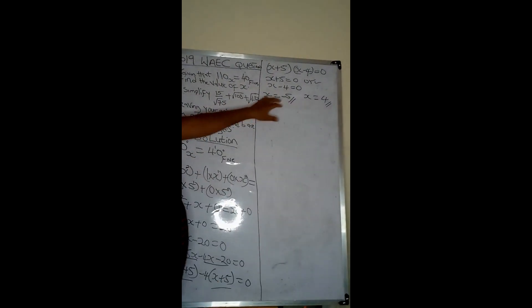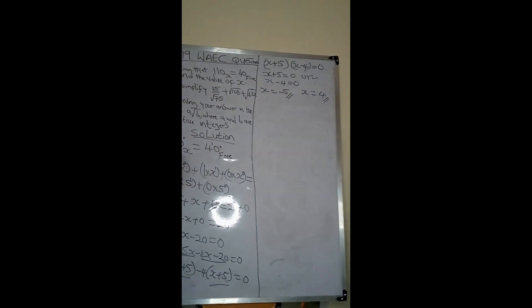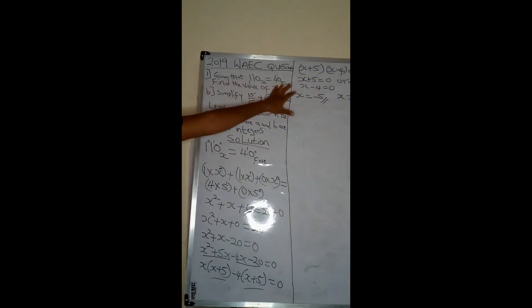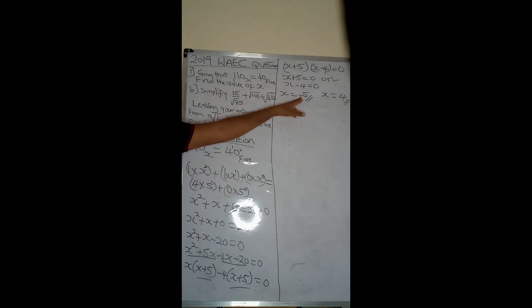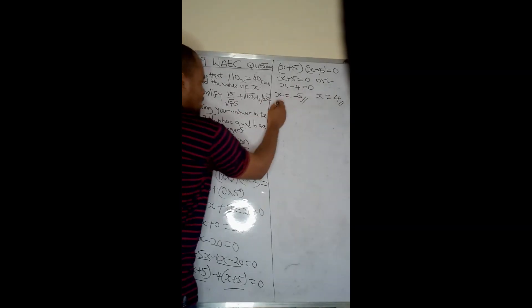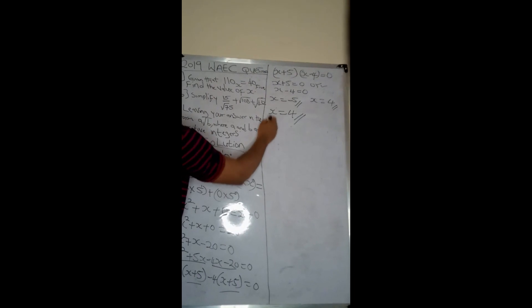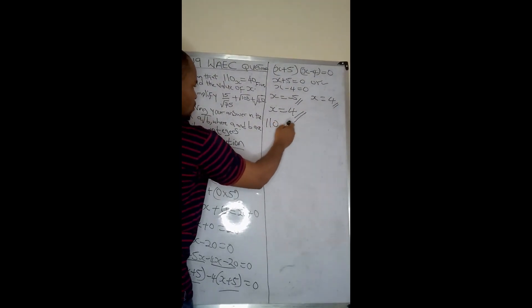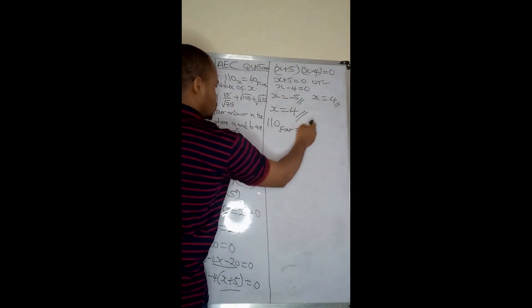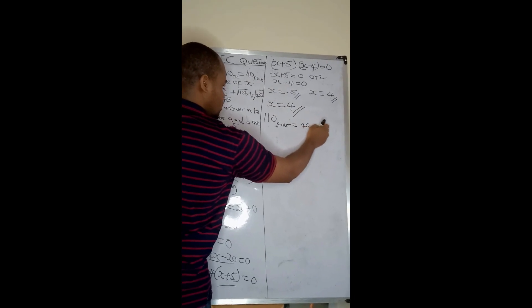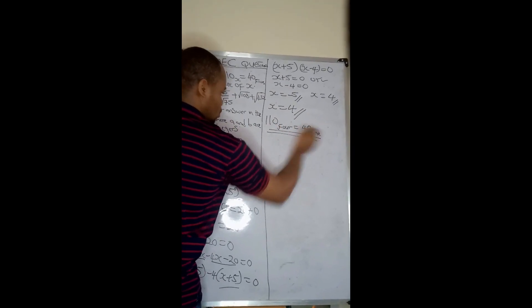We have two values of x as minus 5 and 4. But let's look at the question. It's a number-based question. Can I have a negative number base? The answer is no. So my x will be equal to 4. So 110 base 4 will be equal to 40 base 5. That's the solution to this question.